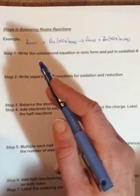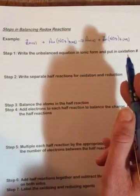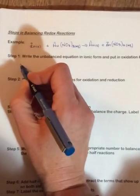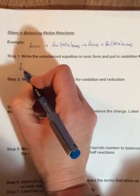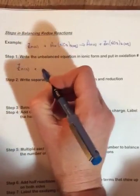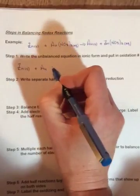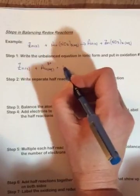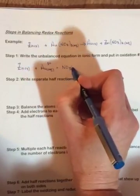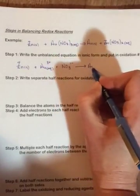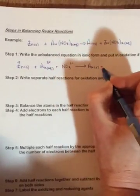Okay, so here we go for the check. First step says write the unbalanced equation in ionic form and put in the oxidation numbers. What that's really saying is write it so that it's dissociated. So we'll have zinc solid, we'll have gold ion which is three positive, we'll have a nitrate ion which is negative one.